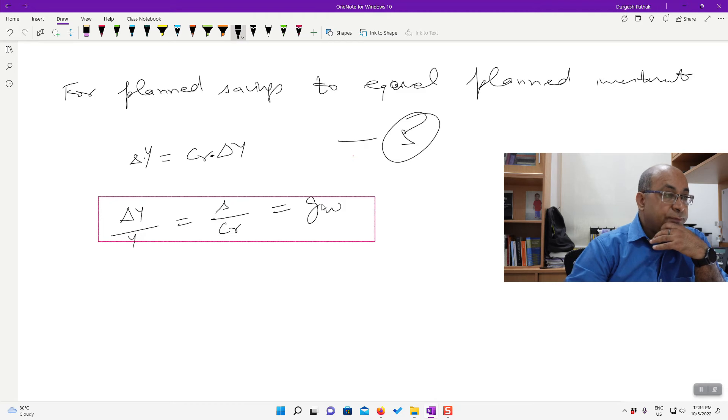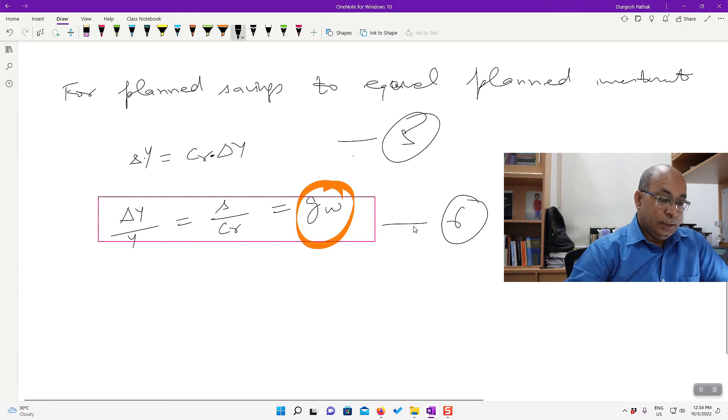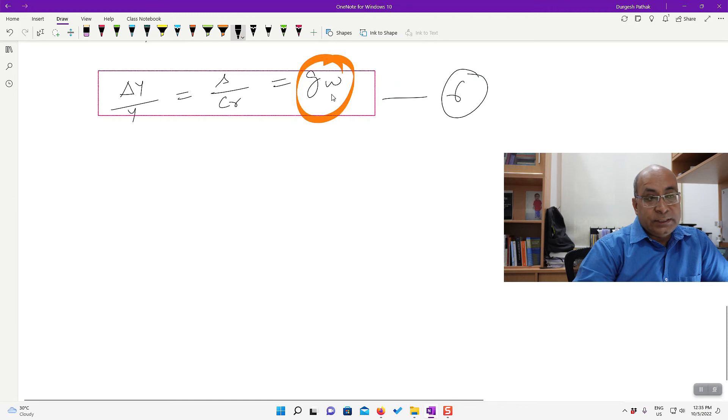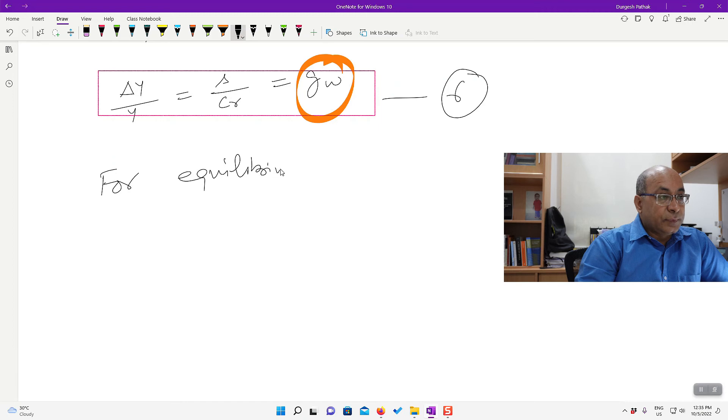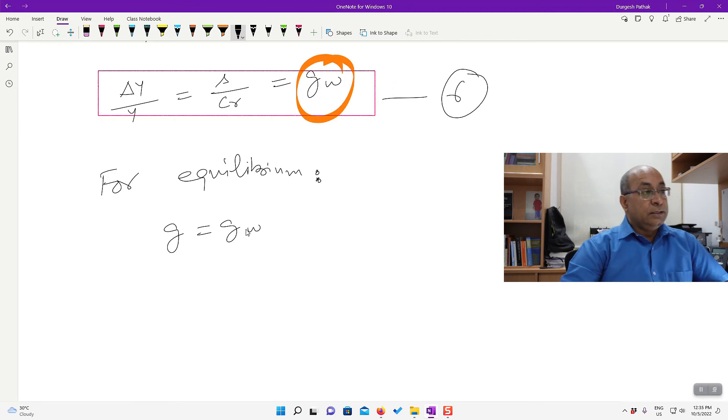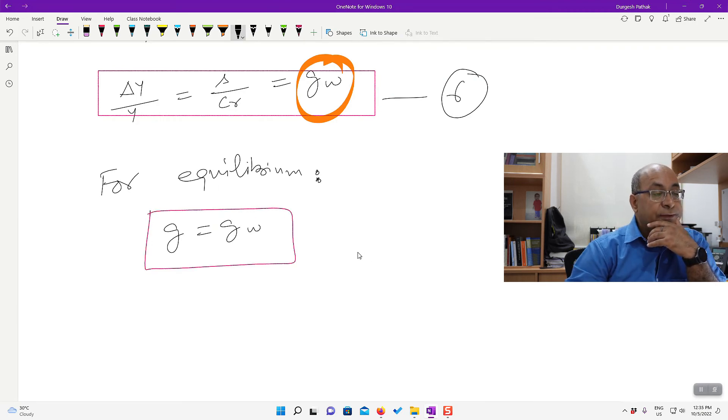This is the warranted rate of growth, and this is giving me the moving equilibrium in an economy. So if GW prevails, then we are going to have a dynamic equilibrium in a growing economy. So this is the GW that is required. Now for equilibrium in the economy, what should happen is that what I desired or what is required is equal to what is happening. I need to have G is equal to GW. So if this is happening, then we have our short run equilibrium in a moving economy. So if it is not, then what happens?